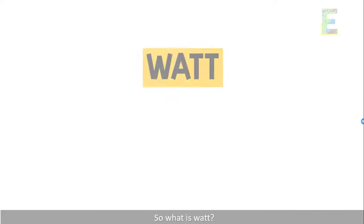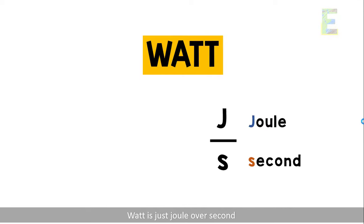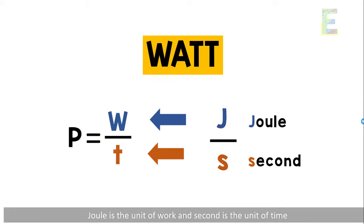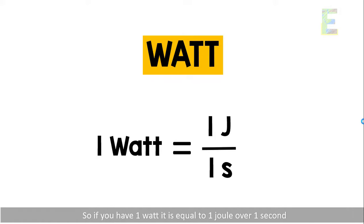What is a watt? A watt is joules per second — joule is the unit of work and second is the unit of time. So if you have one watt, it is equal to one joule per one second.